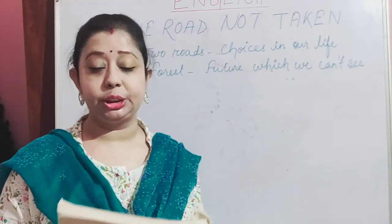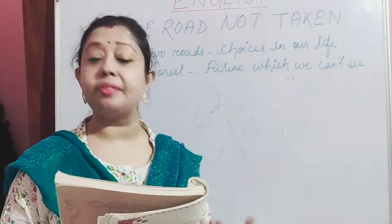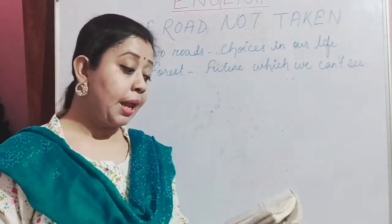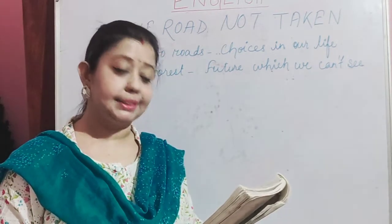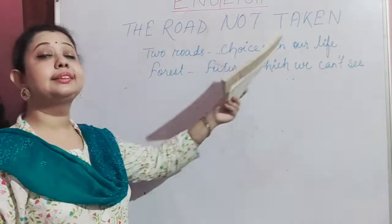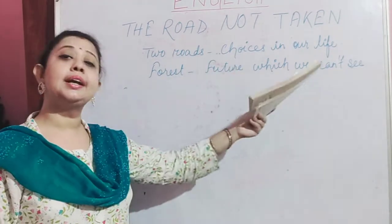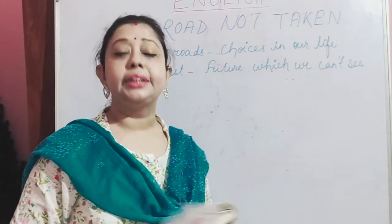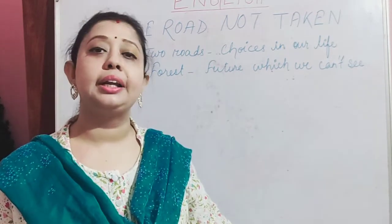Two roads diverged in a yellow wood, and sorry I could not travel both, and being one traveller long I stood, and looked down one as far as I could, to where it bent in the undergrowth. Now here I have written: two roads means choices in our life, the forest which means the yellow wood, and the future which we can't see.